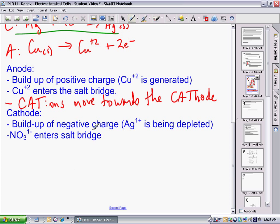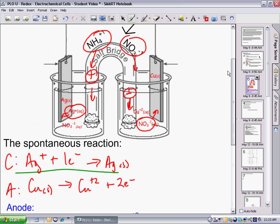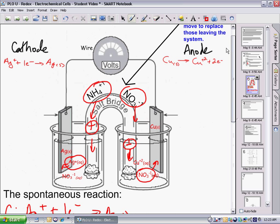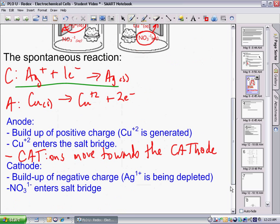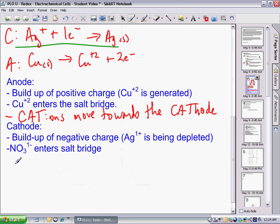At the cathode, we have a buildup of negative charge. Silver +1 is being depleted, that means the nitrate is actually going to move into the salt bridge from the anode. The nitrate here at the cathode is going to move towards the anode, so the anions, or negatively charged ions, will move towards the anode.